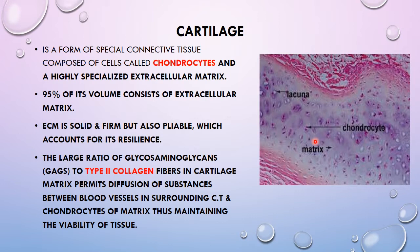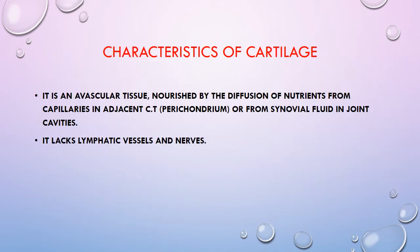Large amounts of glycosaminoglycans are present in the extracellular matrix along with type 2 collagen fibers, but the ratio of glycosaminoglycans is greater than that of collagen fibers. This composition enables the matrix to permit diffusion of substances between the blood vessels in the surrounding connective tissue and the chondrocytes, maintaining the viability of the tissue. Cartilage is an avascular tissue, nourished by diffusion of nutrients from capillaries in the adjacent perichondrium or from synovial fluid in joint cavities. It also lacks lymphatic vessels and nerves.